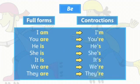The apostrophe in the contractions replaces a missing letter. For example, in I'm, the apostrophe replaces the A in am.